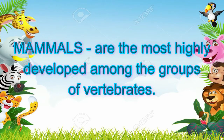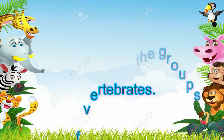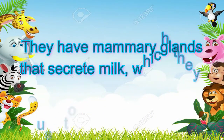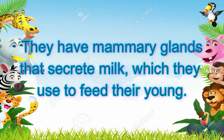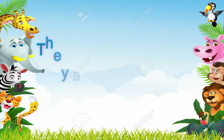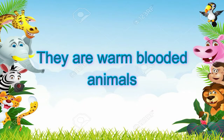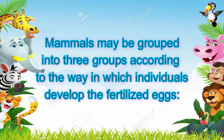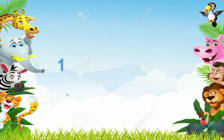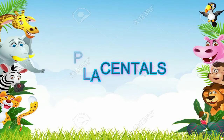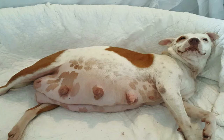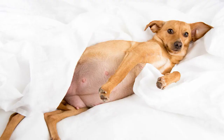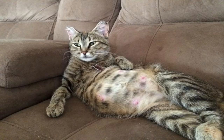Mammals are the most highly developed among the groups of vertebrates. Their bodies are covered with hair or fur. They have mammary glands that secrete milk, which they use to feed their young. Placentals are mammals wherein the embryo receives nutrients and oxygen from the mother's body through an organ called the placenta. Examples are dogs, cats, and elephants.